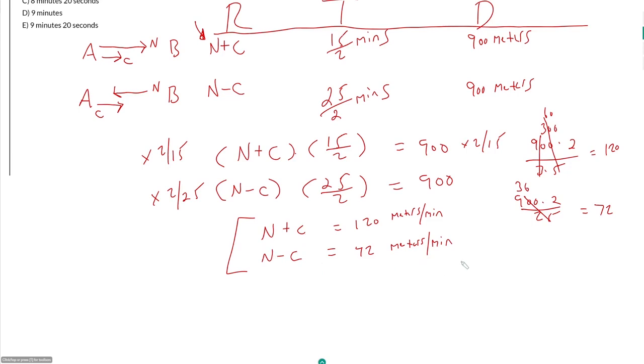If I add the two equations, 2N is equal to 192 meters per minute.